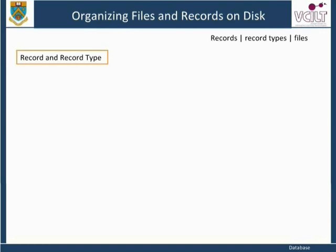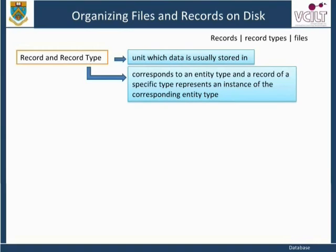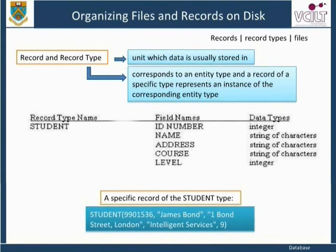A record is a unit in which data is usually stored. A record type corresponds to an entity type, and a record of a specific type represents an instance of the corresponding entity type. For example, a specific record of the student type might be: Student 9901536, James Bond, 1 Bond Street, London, Intelligent Services, 9.